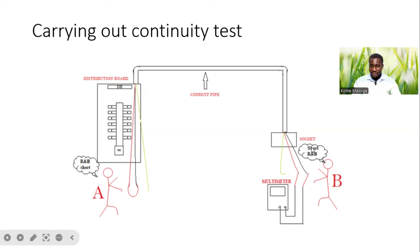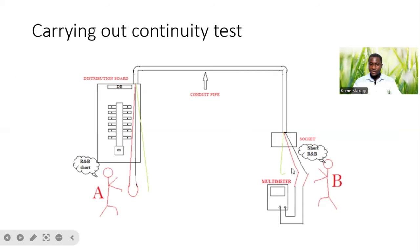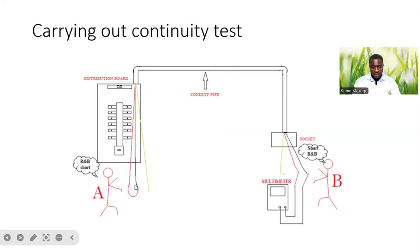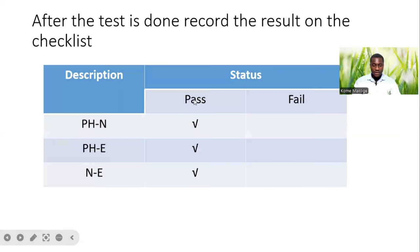The person at A is shorting between the R and B phases — shorting between red and black, which is red and neutral. So it's shorted from the DB side while the person at the field side, person B, conducts the test using the multimeter. We conduct the test as described — we should get a beep sound to confirm that we have continuity on that wire or cable. After the test has been done, we record the result on the checklist. We conducted tests between red or phase and neutral, between neutral and earth, and between phase and earth, and we had a satisfactory result — we put a tick mark on the pass column of our checklist.